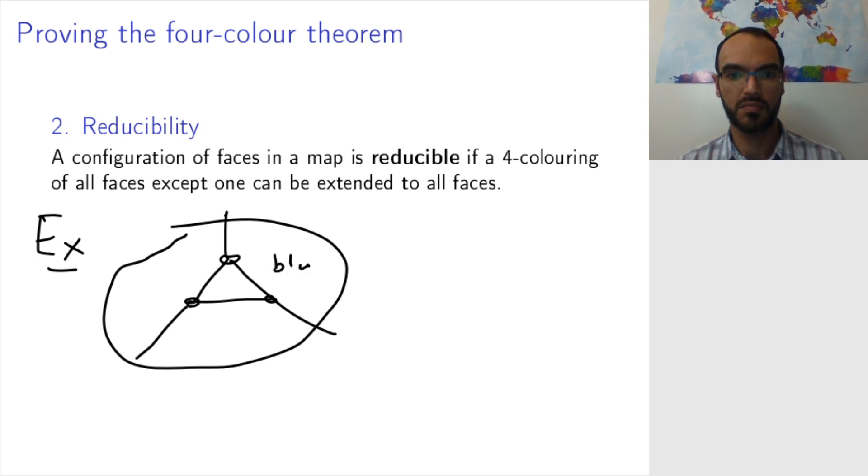say I color them blue, green, and red. Then I can color the whole thing because I have four colors. So whichever the fourth color is that I am missing, I can use for this triangle.